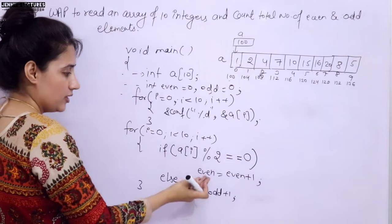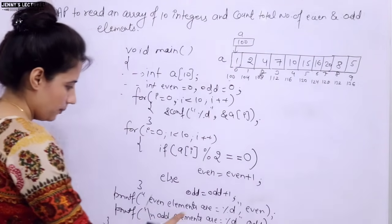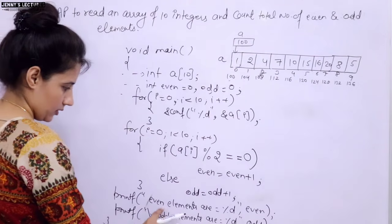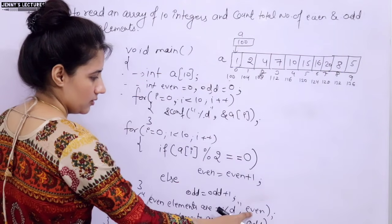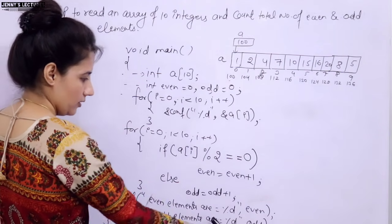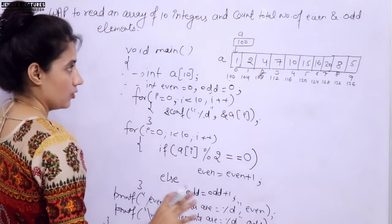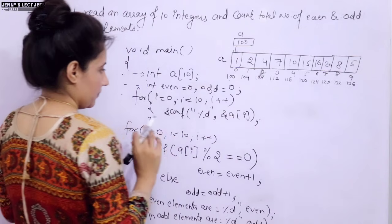After the for loop, you simply print even and odd. Use printf with 'even elements are %d' passing the variable even, and similarly print odd elements. Let me now show you the working of this program step by step.